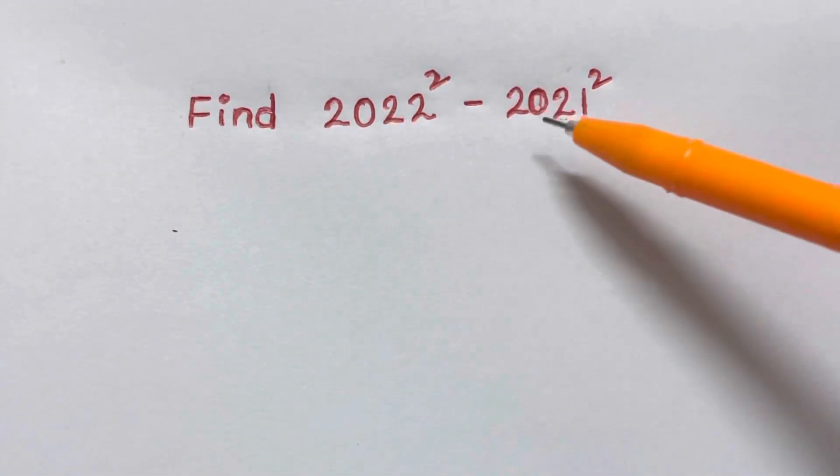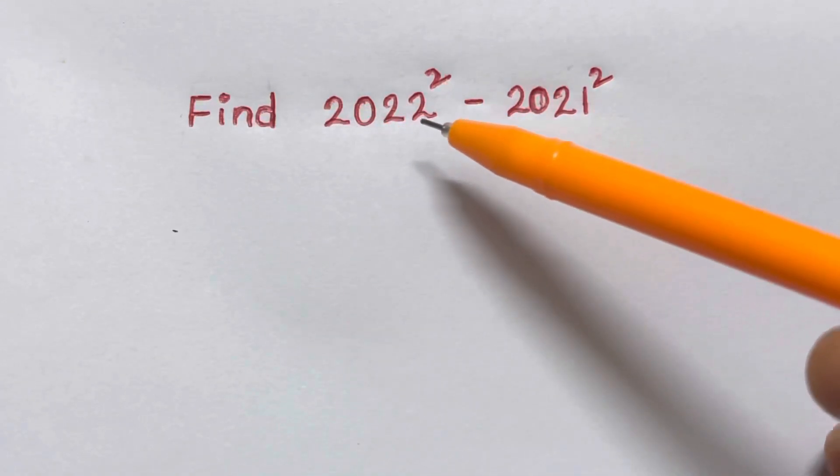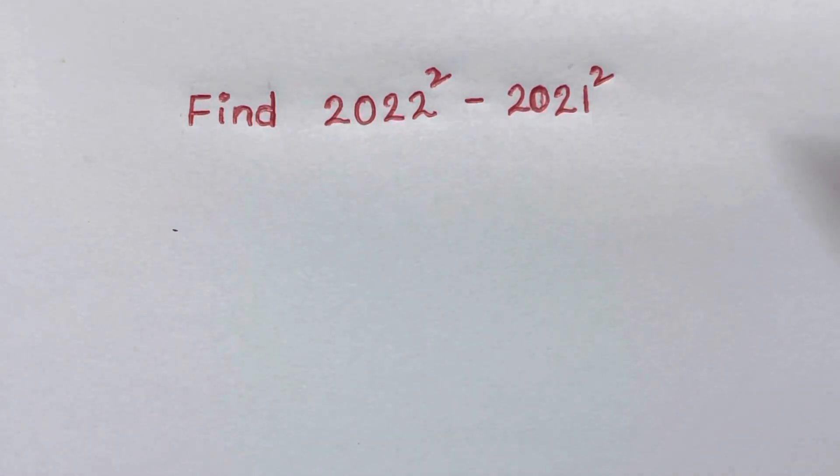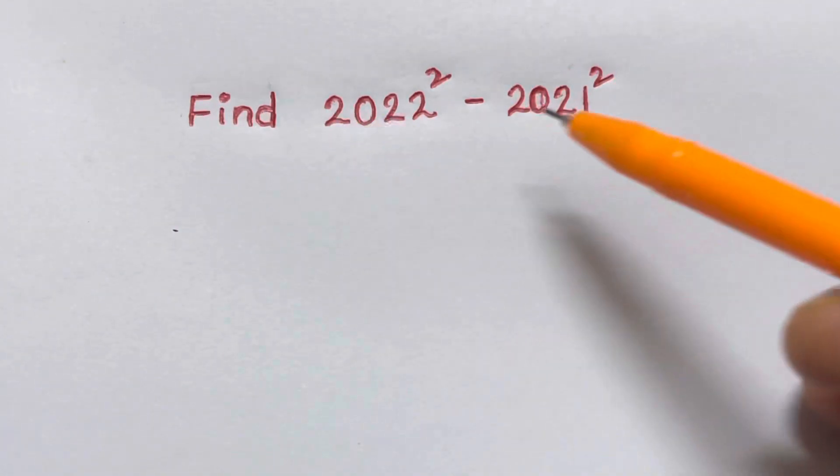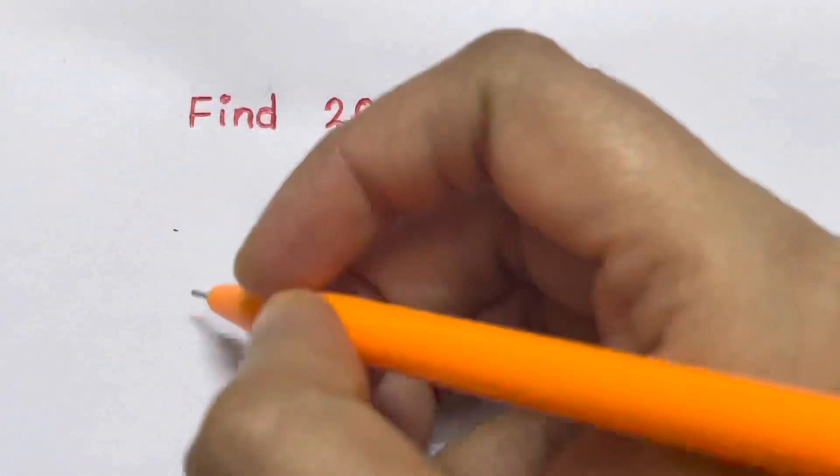Find 2022 square minus 2021 square. Guys, don't fall for the trap and just start calculating 2022 square and minus 2021 square. So all we can do is just write the difference of squares. This is difference of squares.